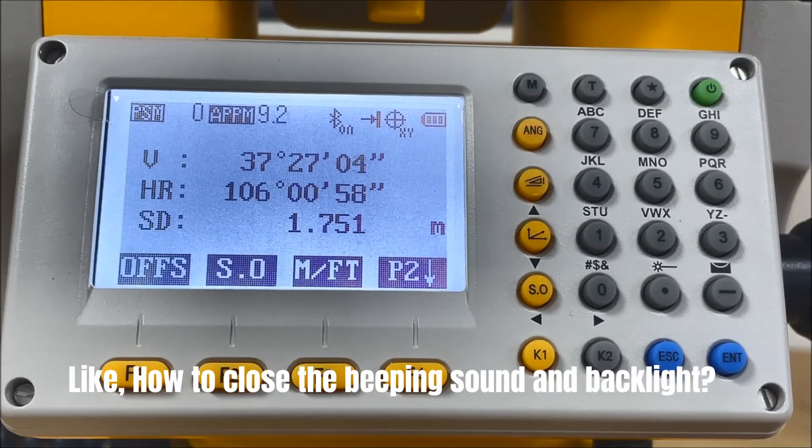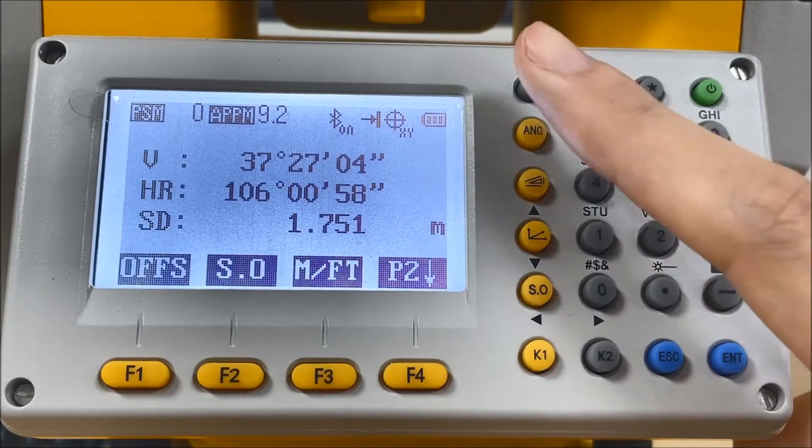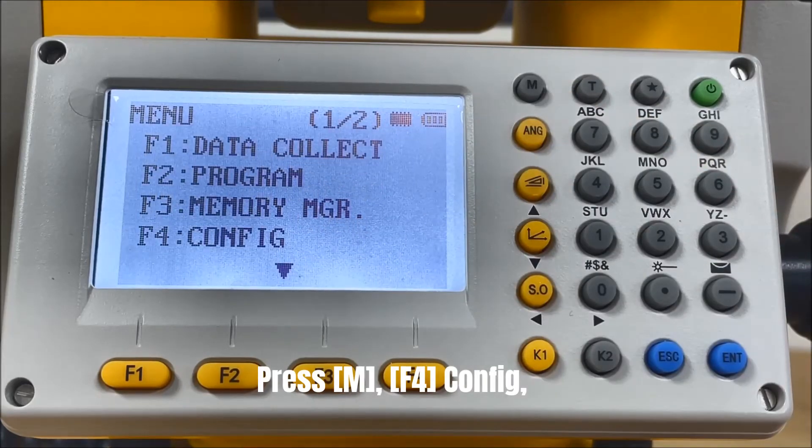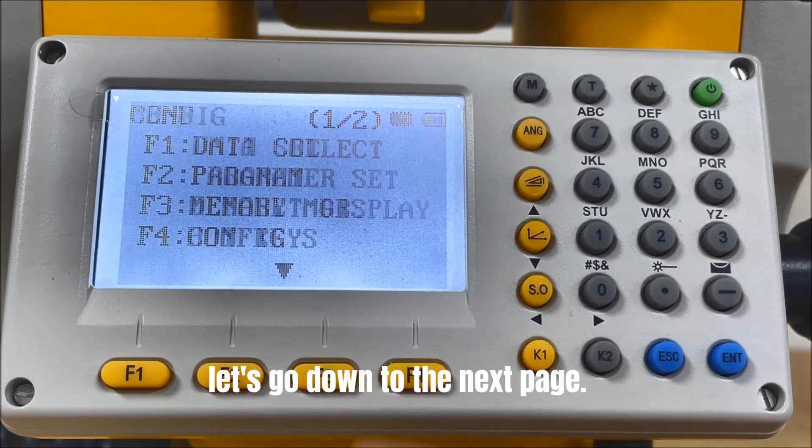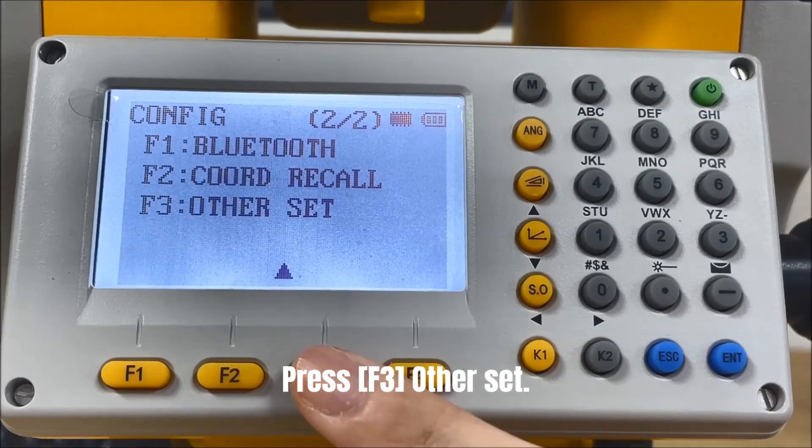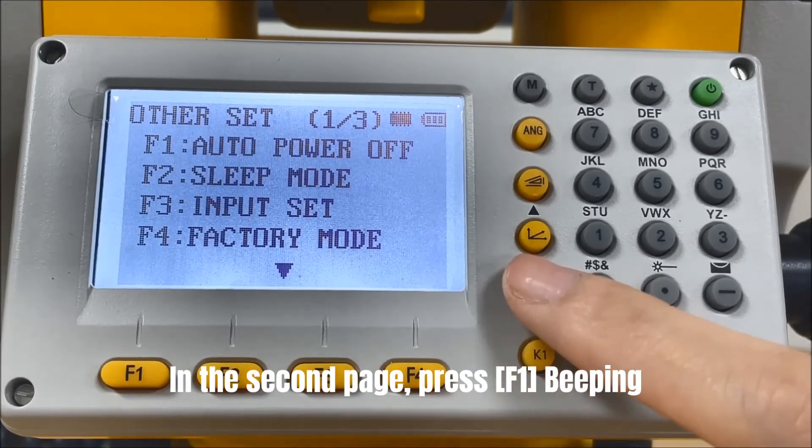Like how to close the beeping sound and backlight. Press Menu, F4 Config. Let's go down to the next page. Press F3 Other Set.